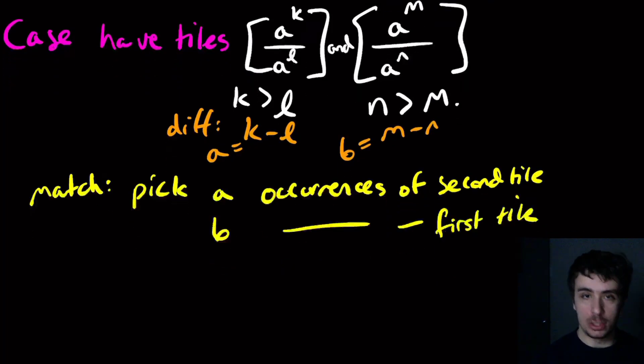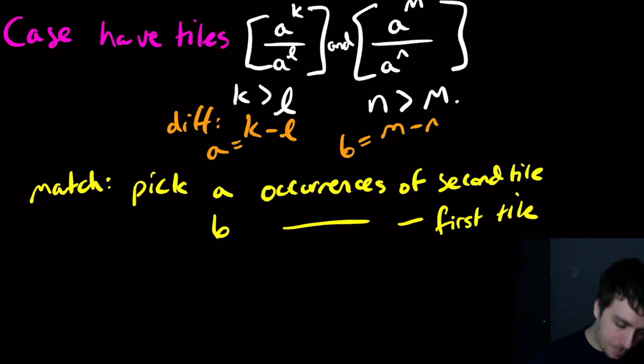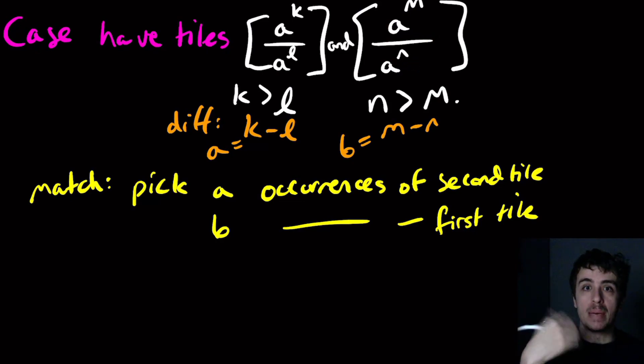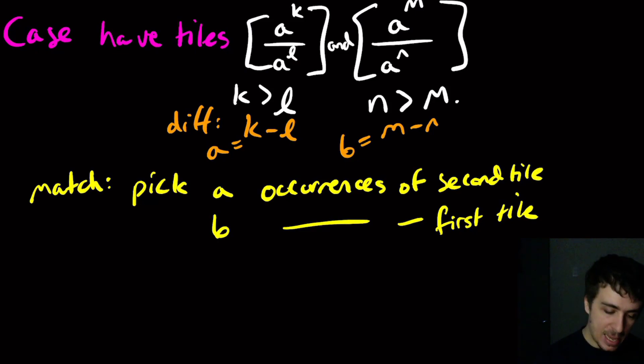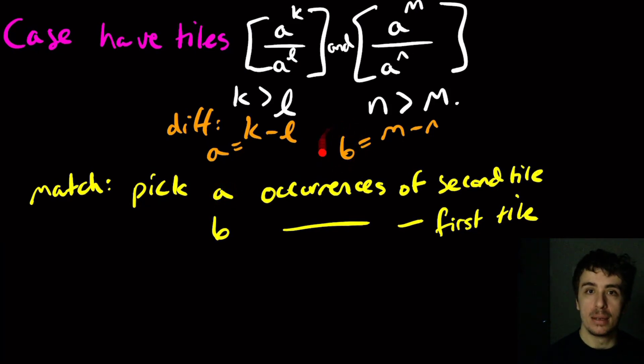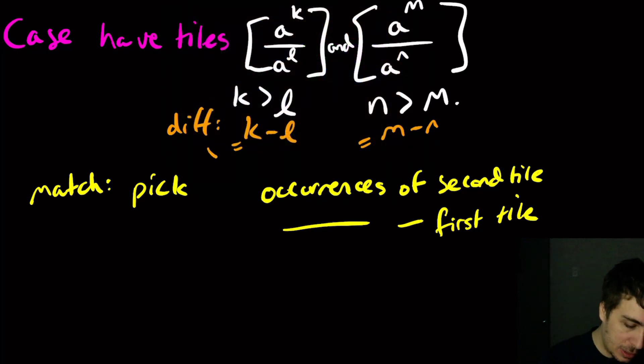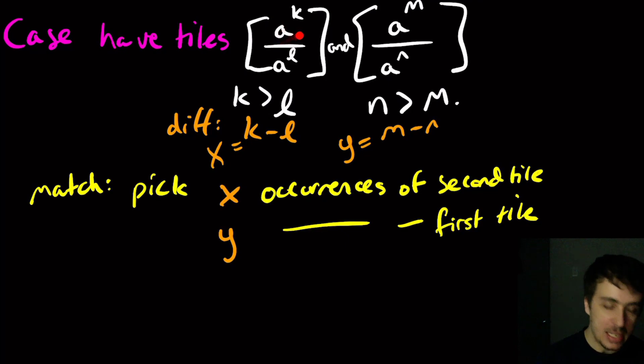And I claim that that's a match because if you think about it, if we pick A occurrences of the second tile, this one right here, that means that the bottom is going to be longer at this point by A occurrences times B of them for, actually I should use different letters. Let me use different letters. So let's call this X and call this one Y.